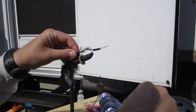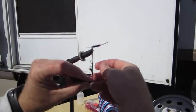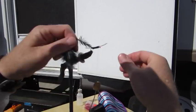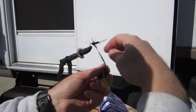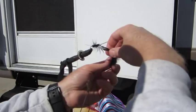Then we're going to simply palmer our saddle hackle forward, starting towards the back, letting those fibers flare and working them forward.